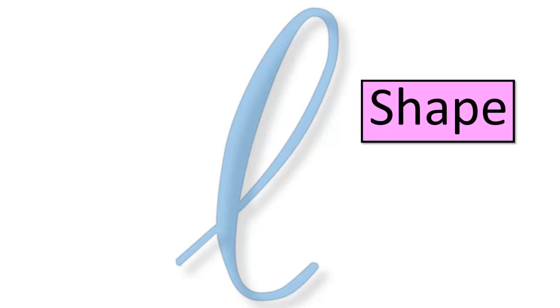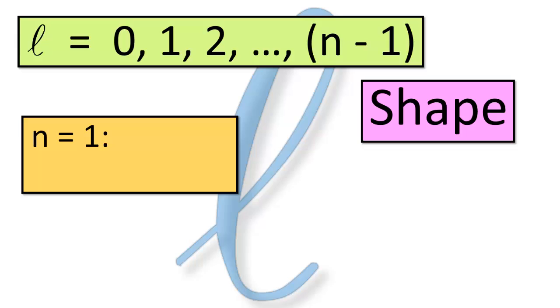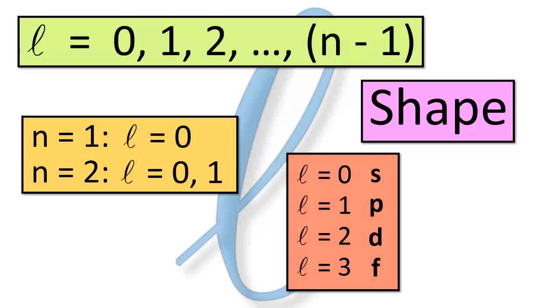Now let's move on to the angular momentum quantum number l. It specifies the shape of an orbital and can take on any integer value ranging from 0 to one less than the principal quantum number. So if n is 1, the only possible value of l is 0; if n is 2, l can be 0 or 1. To avoid confusion, we assign letters to the angular momentum quantum number: s, p, d, and f for l values of 0, 1, 2, and 3 respectively. For most intents and purposes, this is as far as we need to go.